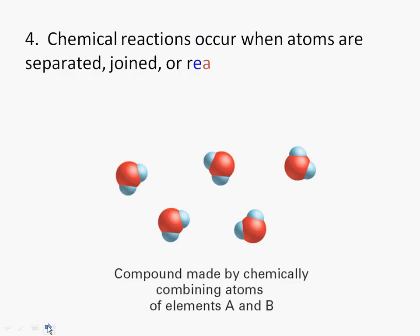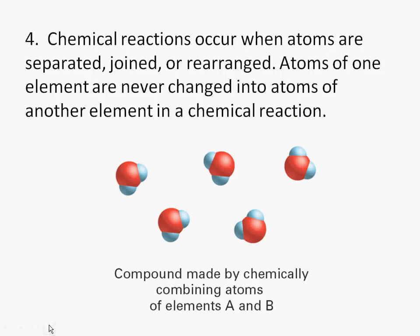Here, or his fourth point in his theory, chemical reactions occur when atoms are separated, joined, or rearranged. Atoms of one element are never changed into atoms of another element in a chemical reaction. So notice that now we have two A's for every one B. This is what the water molecule looks like.